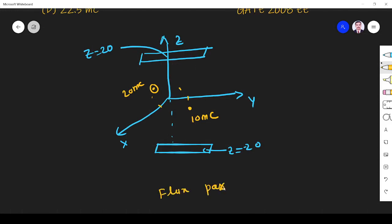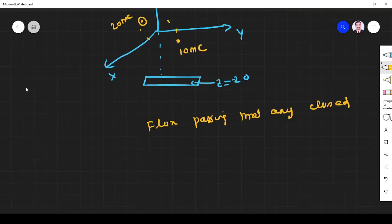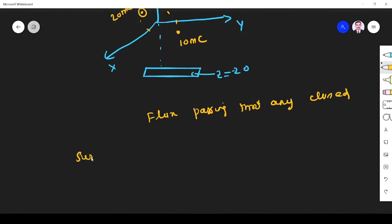Flux passing through any closed surface is equal to charge enclosed. That is what Gauss's law. That is, d dot ds equals q enclosed.